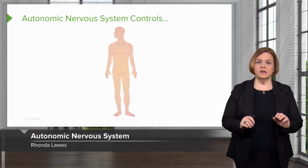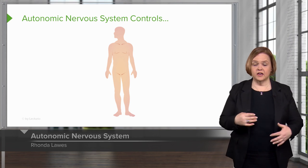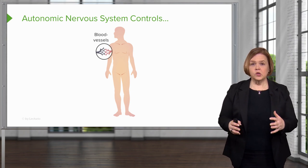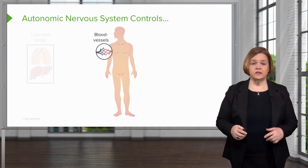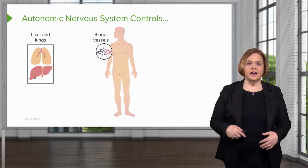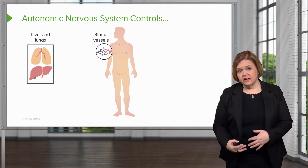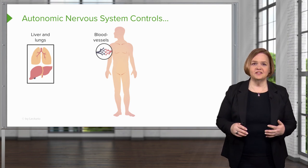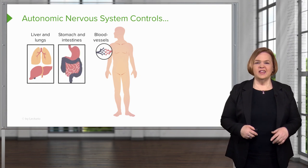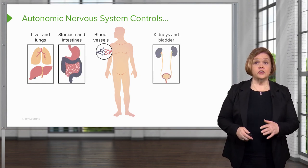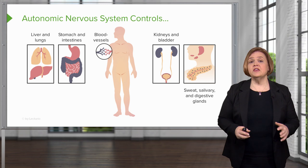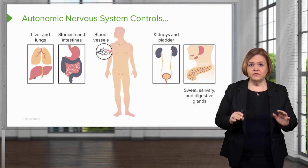The autonomic system is on autopilot — my body takes care of it without me having to think about it, which is a good thing because I don't have to think about controlling my blood vessels. Can you imagine what life would be like if I had to think every minute: breathe in, breathe out, make cholesterol, make clotting factors? My liver and lungs are under autonomic control, as are my stomach and intestines, kidneys and bladder, and sweat, salivary, and digestive glands.